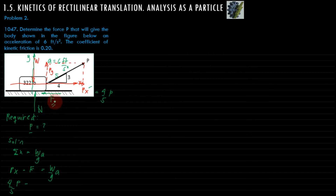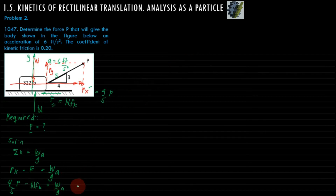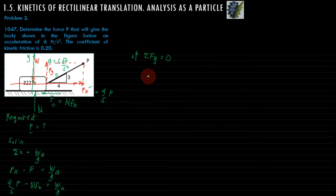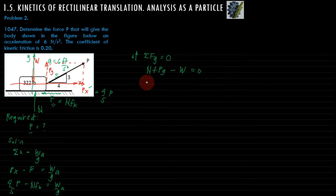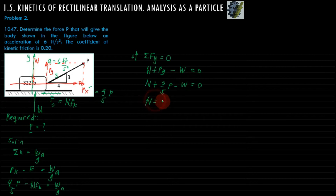The friction force equals the normal force multiplied by the coefficient of kinetic friction. To find the normal force in terms of P, we use summation of forces in the vertical direction equals zero, taking upward as positive. So: normal force plus Py minus W equals zero. Since Py equals 3 over 5 times P, the normal force equals W minus 3 over 5 P.